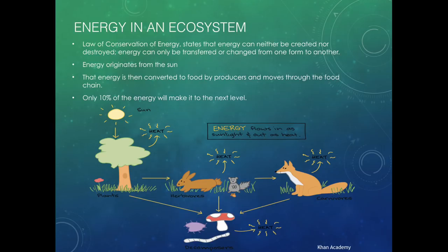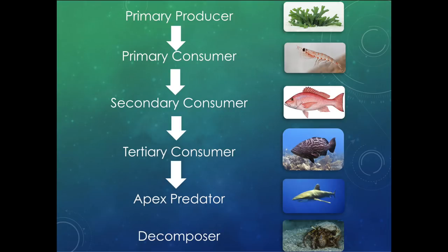The energy in an ecosystem — some of you may be familiar with the law of conservation of energy: energy can neither be created nor destroyed; it can only be transferred or changed from one form to another. All the energy created in this ecosystem is getting transferred to some degree. Energy starts from the sun, the producer photosynthesizes, and then that energy gets consumed by your primary, secondary, and tertiary consumers. But only 10% of the energy will actually move to each level. That means as you move up each level, they're going to have to consume more and more.